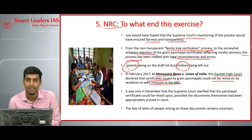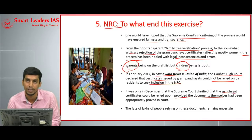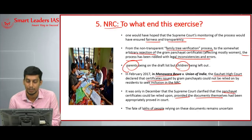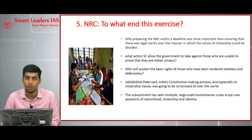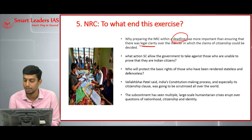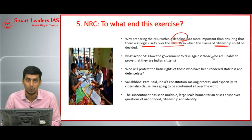It was only last December that the Supreme Court clarified that panchayat certificates can be relied upon, provided the documents themselves had been appropriately proved in court. Still, the fates of lakhs of people — 40 lakh excluded people relying on these documents — remain uncertain. The Supreme Court has provided a deadline by which the entire NRC process must be completed. But the author questions whether the deadline is important, or whether legal clarity over the manner in which citizenship is decided should be the priority.